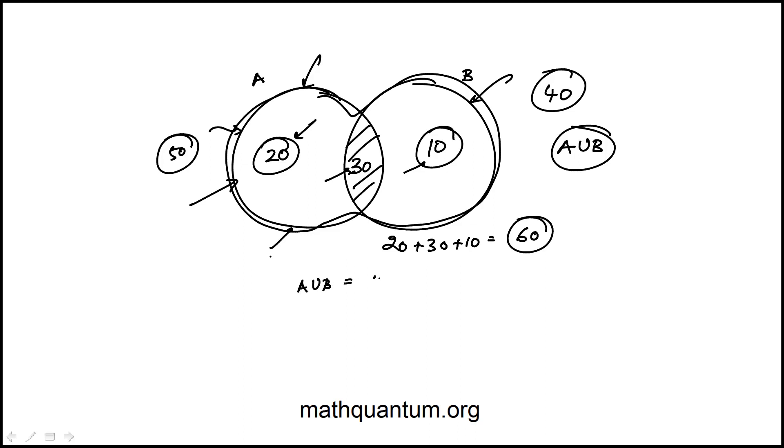There is the union formula, which is N(A union B). You may have seen this Venn diagram formula, but you can also do this conceptually like I wrote here, N(A) plus N(B) minus N(A intersection B), which would then become 50 plus 40 minus 30. Essentially, you're double counting the intersection, and therefore you subtract it once, and you'll get the same answer as you should. So the answer is choice B.